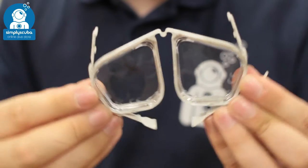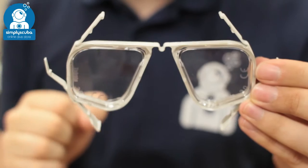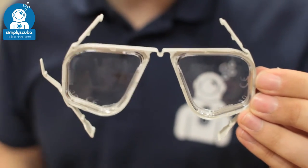These flexible arms and the flexible bridge between them means that they can fit almost any single lens mask. So let's have a look at them inside a mask.